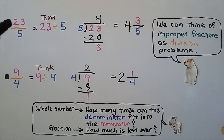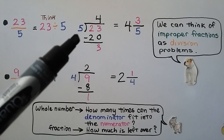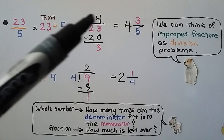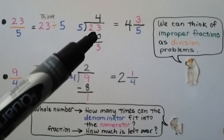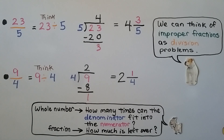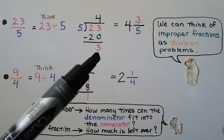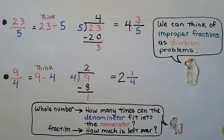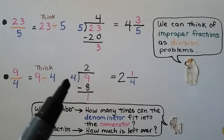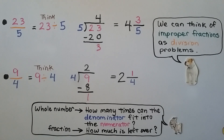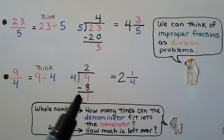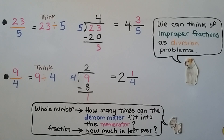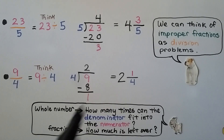For twenty-three fifths, we think twenty-three divided by five. How many times can five fit into twenty-three? Five times four is twenty, so we subtract twenty and get a remainder of three. We have four whole and remainder three as the numerator over the divisor five — four and three fifths. For nine fourths, nine divided by four: four times two is eight, remainder one. We have two and one fourth. The whole number is how many times the denominator fits into the numerator, and the remainder becomes the fraction's numerator.